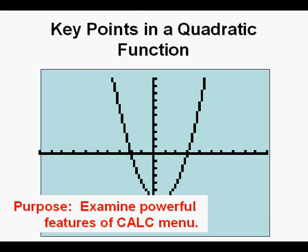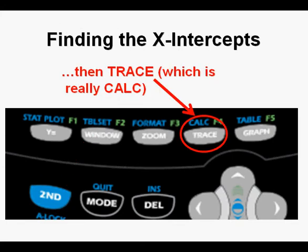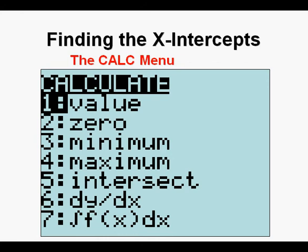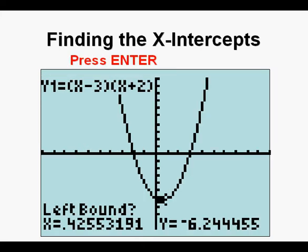We can look at where the function crosses the x-axis and y-axis and get close, but one of the main purposes of this video is to fully examine the powerful features in the calc menu to help us find the vertex and x-intercepts. Let's look at the x-intercepts first. Go to the calc menu by pressing second, then trace — which is really calc because the second key accesses the blue CALC label above it. This is the calc menu. All seven items are powerful tools. The x-intercepts are also called zeros. Go down to item two, zeros, then press enter.